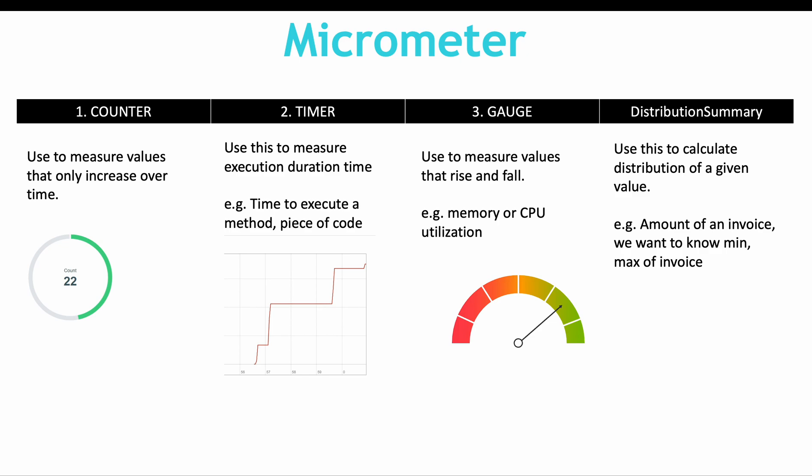Then you have a gauge, which is used to measure values that rise and fall. Memory or CPU utilization is a typical example.